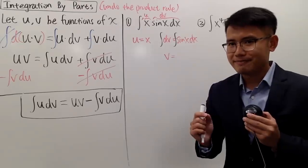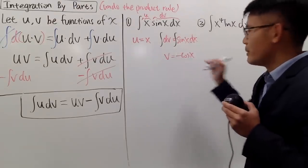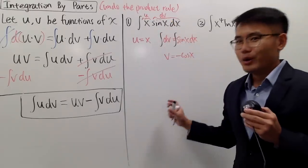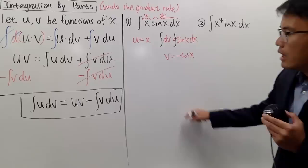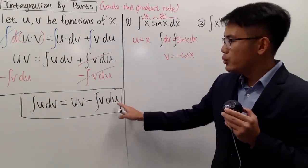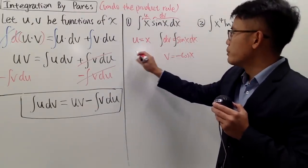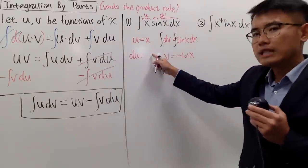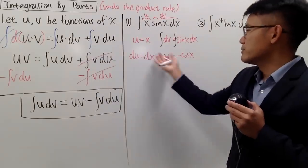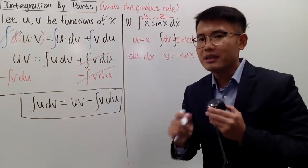I also need du on the right-hand side. To get du, I differentiate u = x on both sides, similar to u-substitution. The derivative of x is 1, so du = 1·dx = dx. These are my ingredients: u = x, v = −cos(x), du = dx. Now we'll put them together to get the answer.